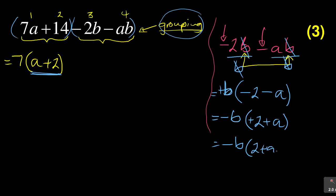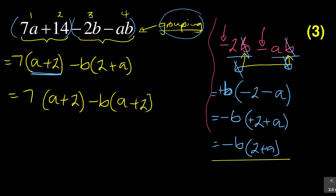So you see that what I have now is minus b, 2 plus a. I can actually write it as a plus 2. This is a plus 2, this is 2 plus a. You can rewrite this as 7 times a plus 2, and then minus b times a plus 2. The key thing is to match the brackets. If the brackets are matching, you have done the most important part of factorizing by grouping.